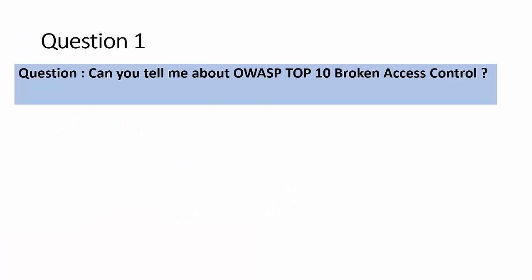The first question: can you tell me more about broken access control? If you're going for any kind of application security job, they mostly ask questions from the OWASP Top 10, and one of the first vulnerabilities is broken access control. Broken access control is a vulnerability in an application by which a user can access resources for which they do not have permission.